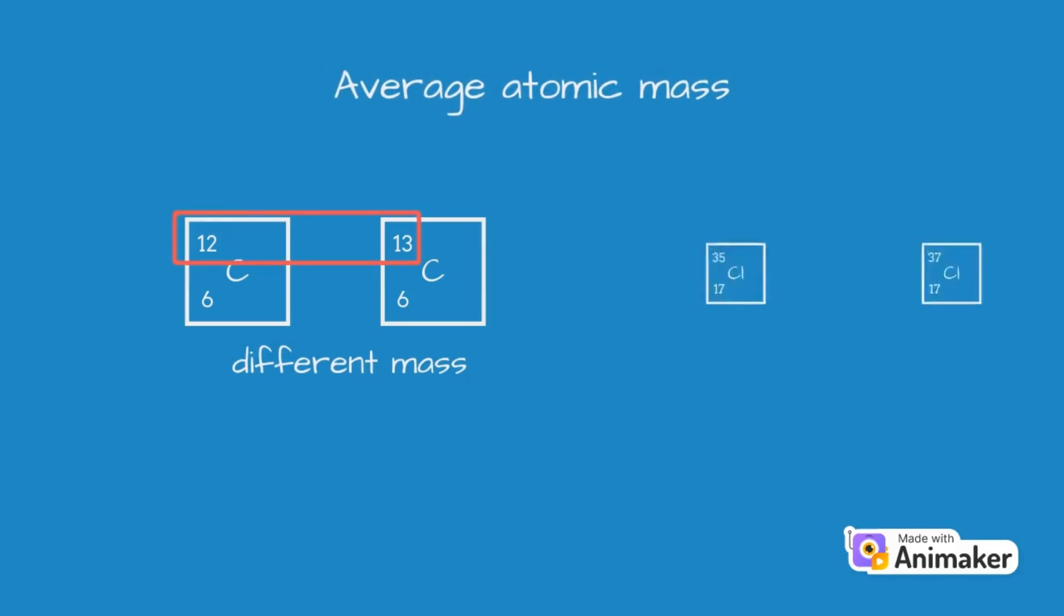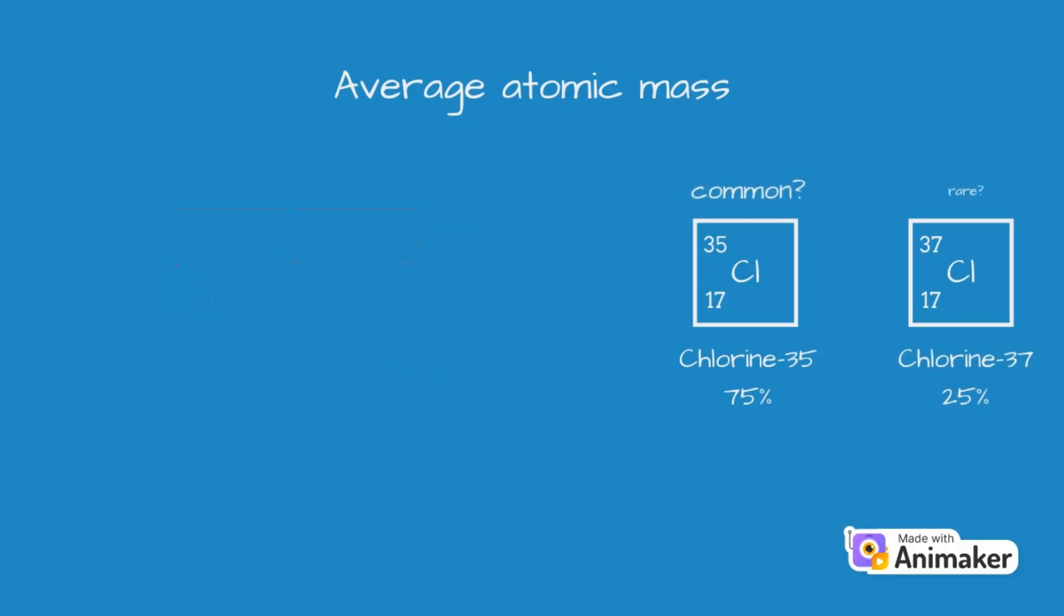For example, chlorine occurs in nature in two isotopes: chlorine-35 which has an abundance of 75%, and chlorine-37 which has an abundance of 25%. By abundance, we mean how common, or how rare that isotope is in nature. So, if we collect a sample of chlorine, 75% of the atoms will be chlorine-35, and 25% will be chlorine-37.